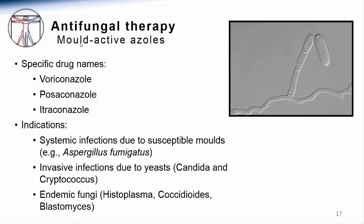More recently, several azole compounds have been developed with activity against invasive mold infections. These include itraconazole, voriconazole, and posaconazole. Itraconazole is limited by comparatively poor oral bioavailability, so most serious mold infections are treated with one of the other two agents. Voriconazole has been demonstrated in clinical trials to be the most effective medication for the treatment of pulmonary aspergillosis. Posaconazole is very effective in the prevention of serious fungal infections after chemotherapy-induced neutropenia. Both come in IV and oral formulations, and clinicians often follow serum drug levels to confirm oral absorption.